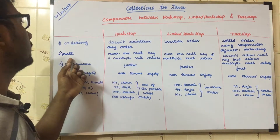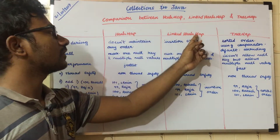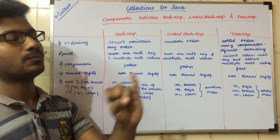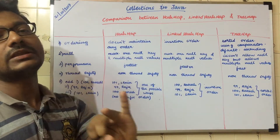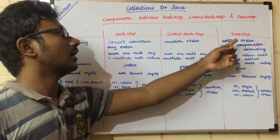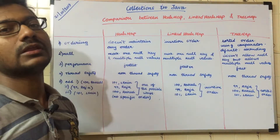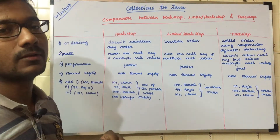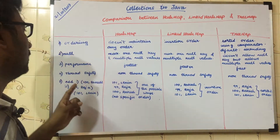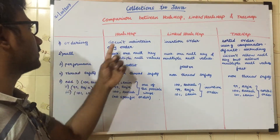Next, null values. HashMap and LinkedHashMap allow maximum one null key and multiple null values support. But TreeMap doesn't allow null keys. However, multiple null values may be supported.